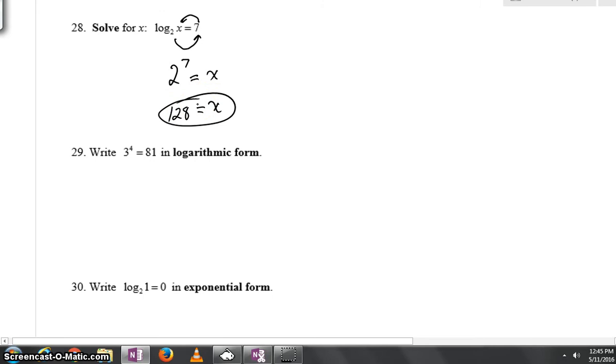For number 29, again, writing as a log, we had a little statement that the base of the log is also the base of the exponent. For number 29, we know that 3 goes down as the base of the log. The actual power never goes inside of the log. It's equal to the log. And the 81, the last number, has to come here.